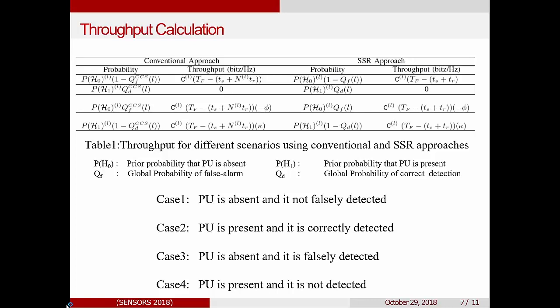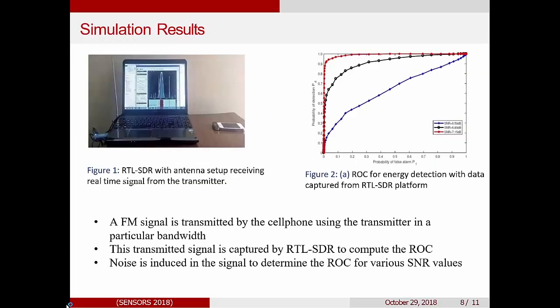And lastly, the case when your PU is present and it is not detected. So it is being used and you transfer your data. So in this case, you still get your throughput, but it's multiplied by a coefficient. Now what I want to highlight in this table is on the left hand side, we have the conventional approach and right hand side we have the SSR. So in this equation, you can see that your reporting time is multiplied by the number of sensors which are reporting that is N for that particular channel. But on the right hand side, this term is just one. So you have more time available for data transmission. Whereas in this case, you have less.